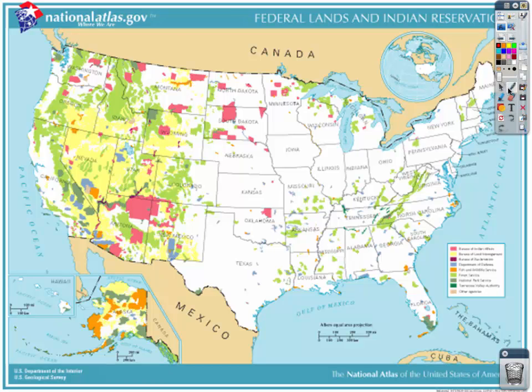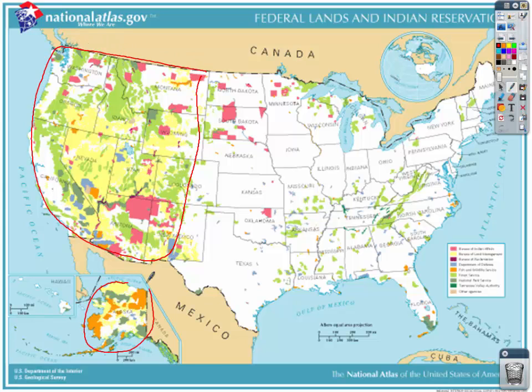Most of our publicly owned land is in the West and Alaska. About 55% of all public lands are in the 11 most Western states, and about 37% more is in Alaska — so about 92% of all public lands are in Western states, leaving about 8% in the East. Most of the land in the West is government-owned, creating two very different cultures.